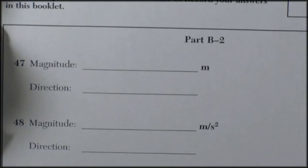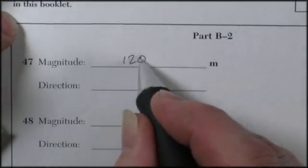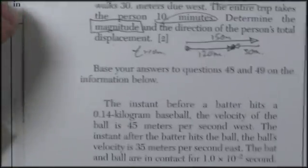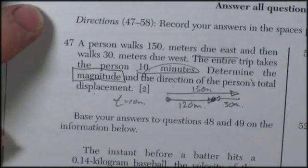So let's see the answer sheet. And they want the magnitude, 120 meters. And the direction would be, well, the same direction as the 150, and that would be east.